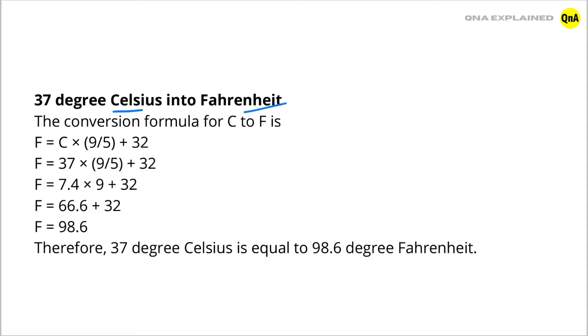The conversion formula for Celsius to Fahrenheit is: F = C × (9/5) + 32.